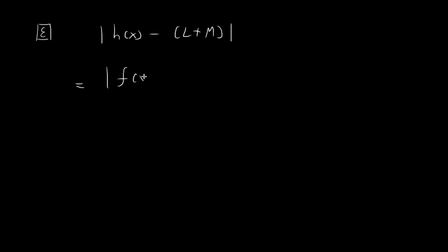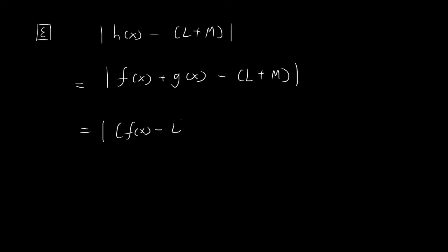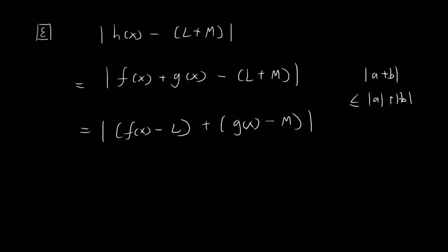Instead of h of x, I'm going to express this as f of x plus g of x, which is the definition of h. Then I'll group the terms — f of x with l, and g of x with m. Then I invoke the triangle inequality, which states that the absolute value of a plus b is always less than or equal to the absolute value of a plus the absolute value of b. So this entire term is smaller than or equal to |f of x minus l| plus |g of x minus m|.